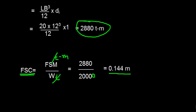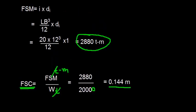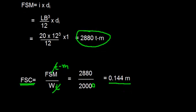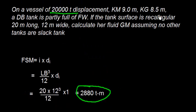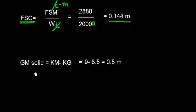Now let us find out the value of GM solid. GM solid is KM minus KG. KM is 9 meters, which is given in the problem, and KG is also given, which is 8.5 meters. So the difference is the GM solid.